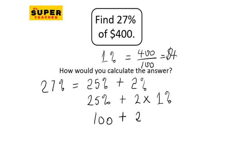Plus two times 1% is $4, so that's $100 plus 2 times 4, which is 8, and that's $108. Good job!